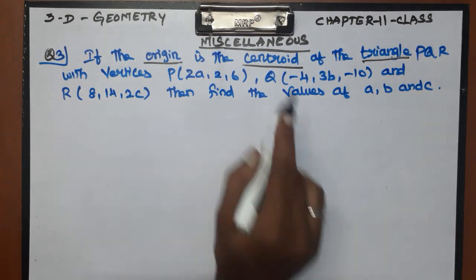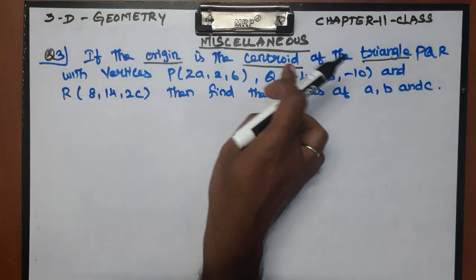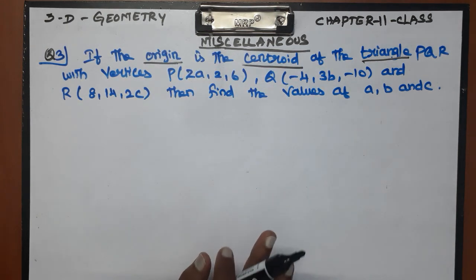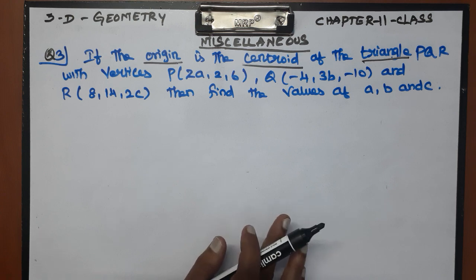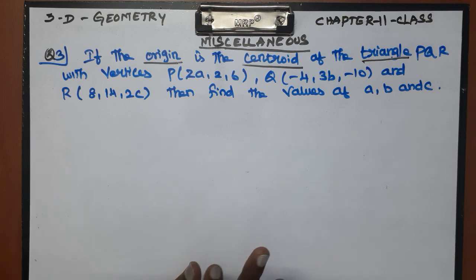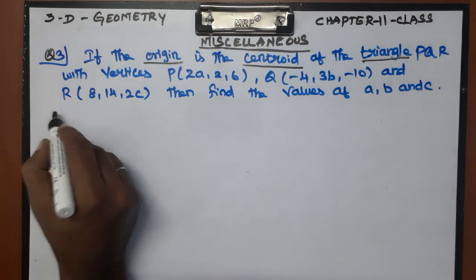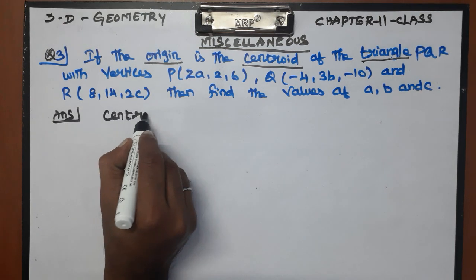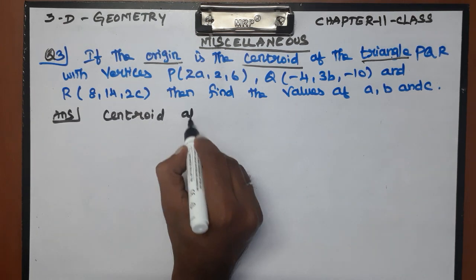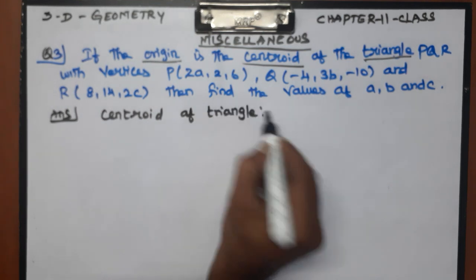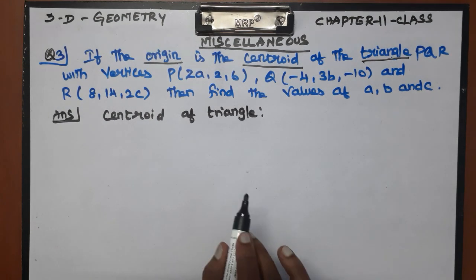This sum uses the centroid formula. The centroid is equal to the origin, so the x value is 0, y value is 0, z value is 0. This is the centroid of the triangle formula.